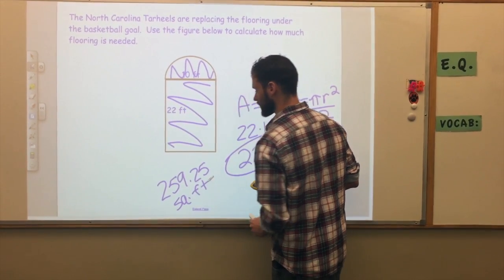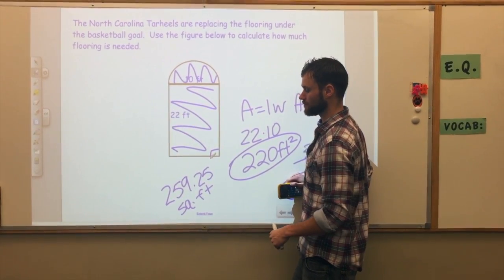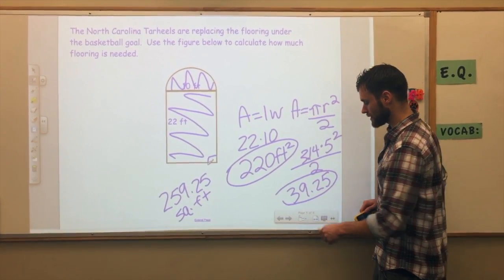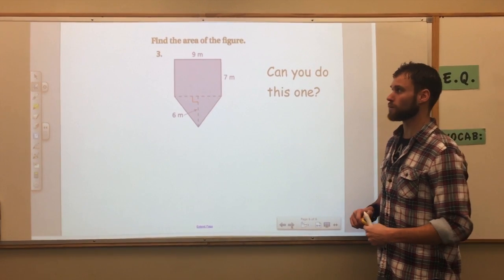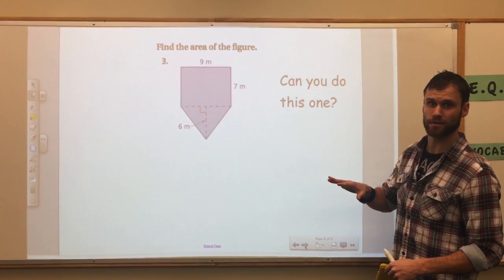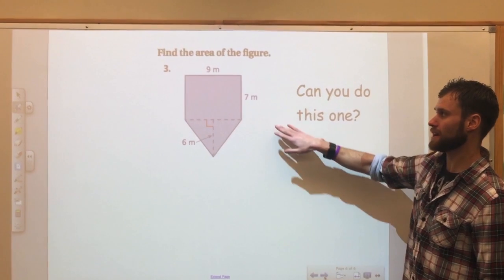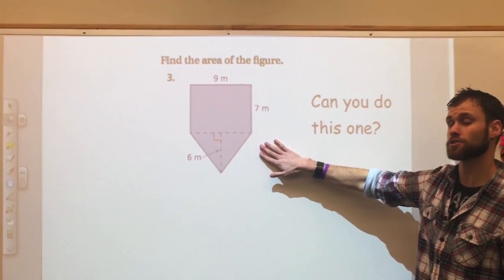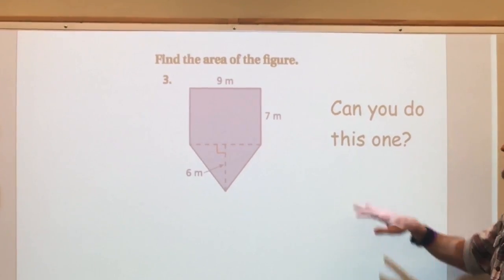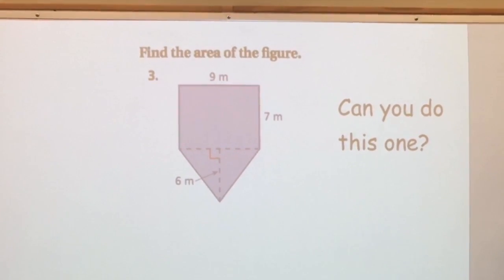Adding the rectangle and semicircle areas: 220 plus 39.25 gives a total area of 259.25 feet squared. That means it would take 259.25 one-by-one-foot squares to fill up the entire figure. I have one more example for you to do on your own — pause the video, find the area of this figure using the formulas from the video, and bring your answer tomorrow. You should be able to identify the shapes and apply the formulas. See you tomorrow!